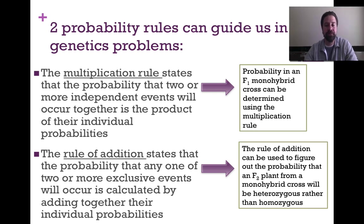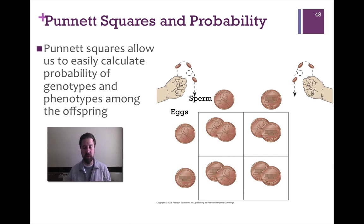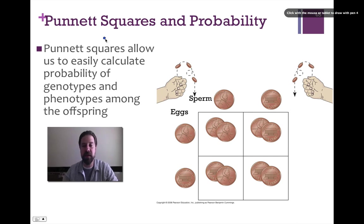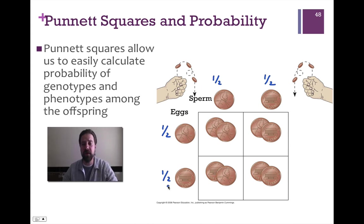Here's a simple example showing a couple of hands flipping pennies. One hand's pennies are equivalent to sperm cells, and the other hand's pennies are equivalent to egg cells — representing a fertilization event and possible offspring. On the sperm side, the chance of getting heads on a coin flip is one-half, and tails is also one-half. An egg being heads is one-half, and tails is also one-half. The chance of getting either heads or tails is simply one-half or 50%.